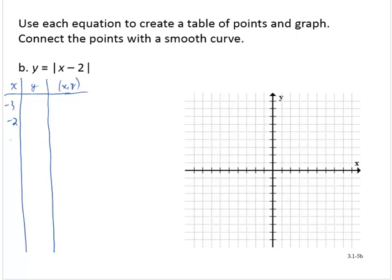So negative 3, negative 2, negative 1, 0, 1, 2, and 3. All right, so y would be the absolute value of negative 3 minus 2. Negative 3 minus 2 is negative 5, and the absolute value of that is 5. So I'd have negative 3, 5.